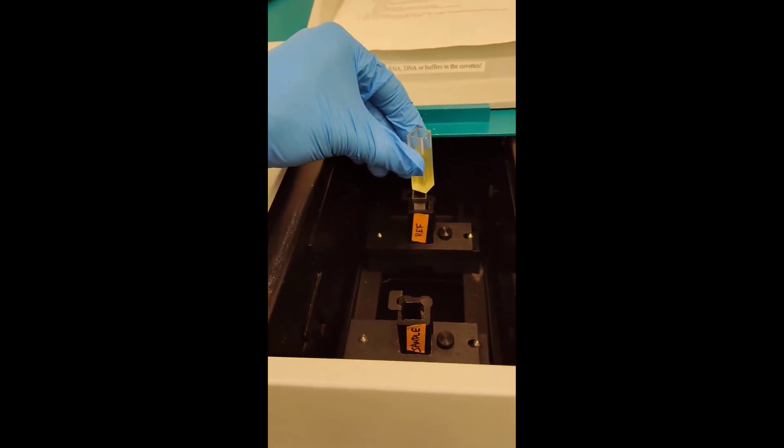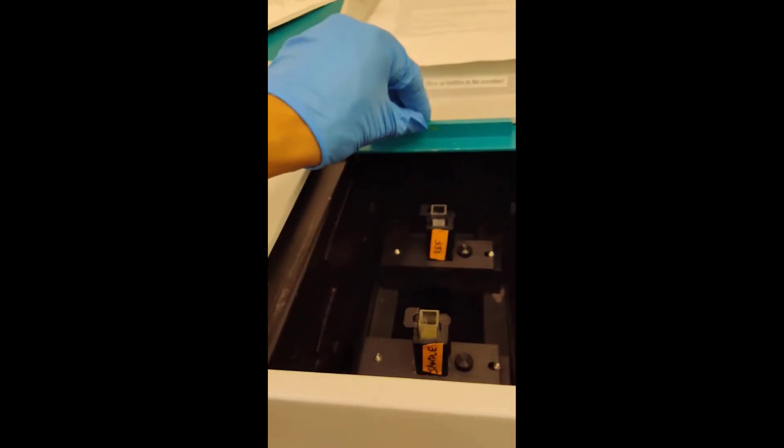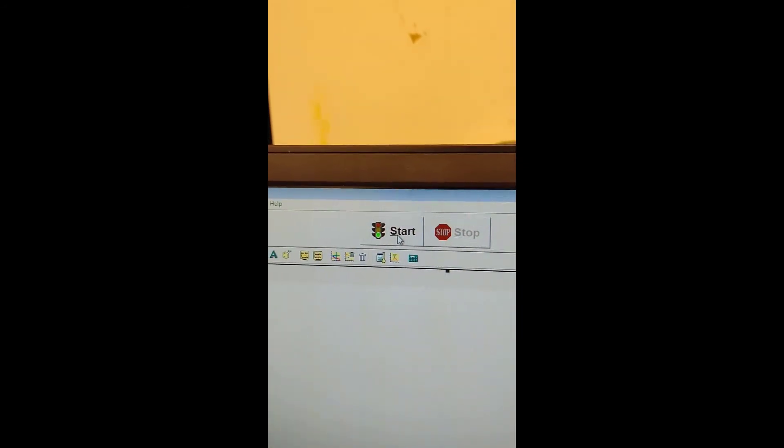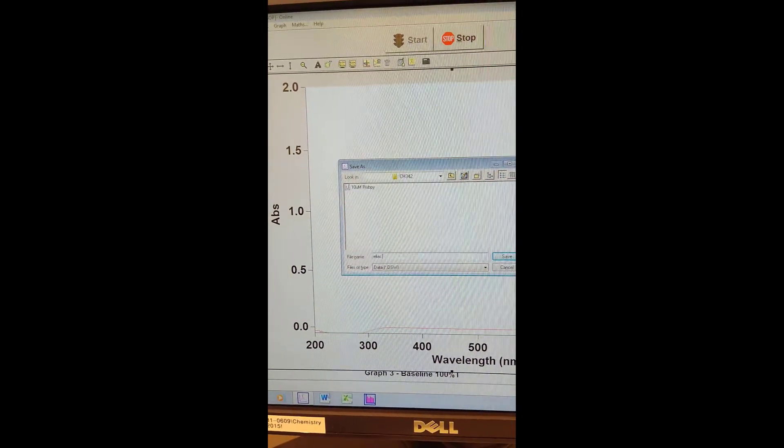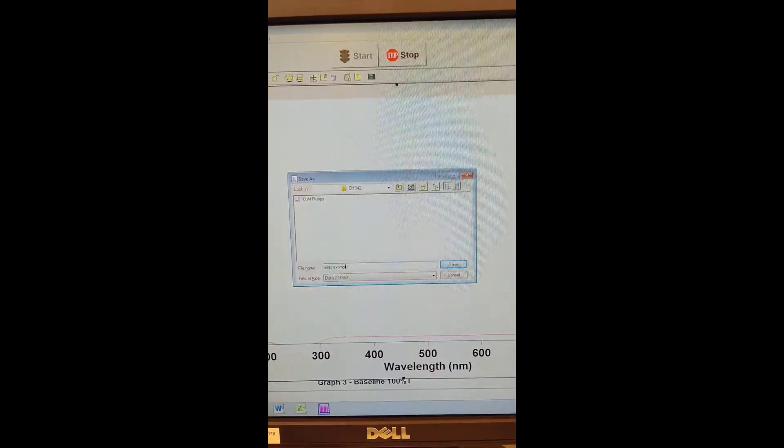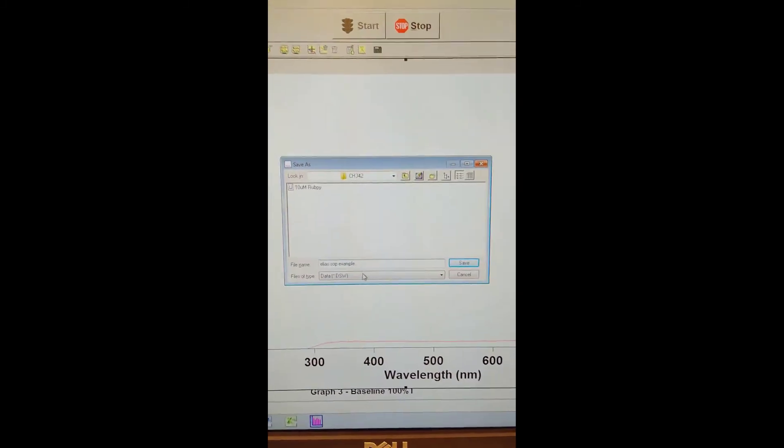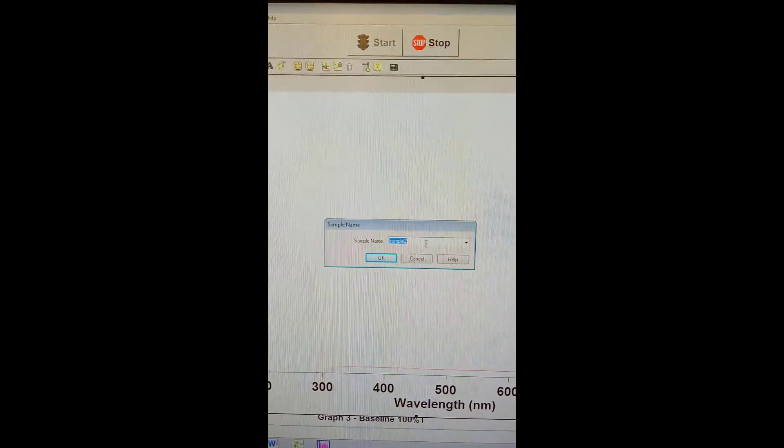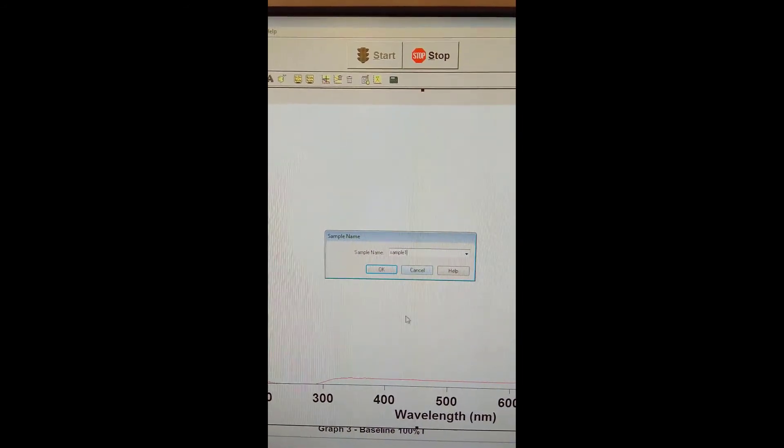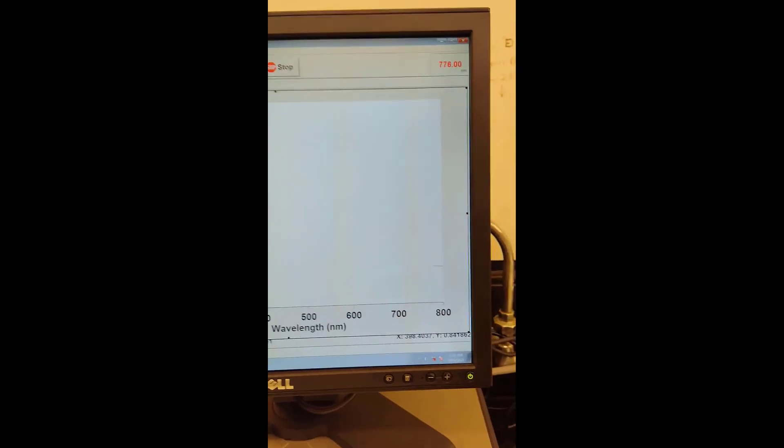I'll clean the sides to make sure the transparent windows are nice and clean. Then I'll load it into the sample compartment, close it up, and collect the spectrum. It's going to prompt me to give it a file name. Make sure you're saving it into the folder you want. Give it a name and make sure you're saving it as a DSW file. Then give it a sample name to help you keep track of your various samples. Hit OK, and it should start to collect the spectrum.